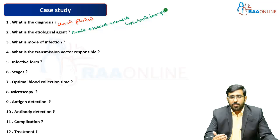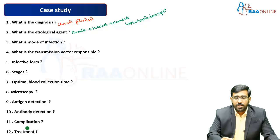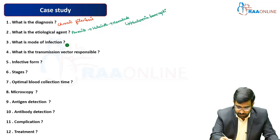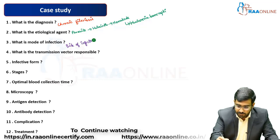Wuchereria bancrofti is transmitted by the insect vector — the Culex mosquito. The infected mosquito injects L3 filarial worm larvae into the host, producing the infection. Moving to question number three: what is the mode of infection? It is the bite of an infected Culex mosquito.